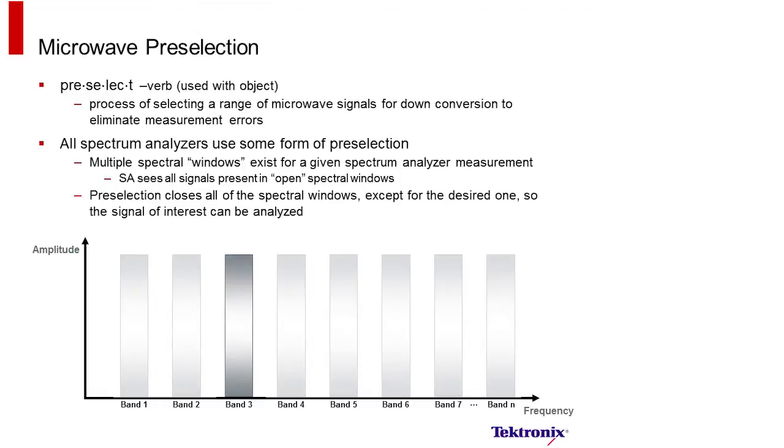We're talking here about microwave pre-selection. Pre-selection is the process of selecting a signal window where you want to observe the signal of interest. There are actually multiple signal windows present in a spectrum analyzer without the use of pre-selection. Pre-selection serves the purpose of closing all the spectral windows except for the desired one, so you can easily see the signal of interest.